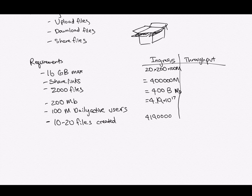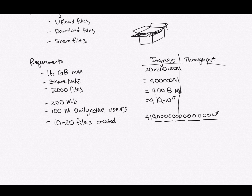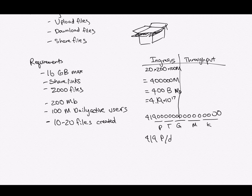Writing that down, we can calculate what that is in larger units: bytes, kilobytes, megabytes, gigabytes, terabytes, petabytes. Actually, I just messed up — it's actually going to be terabytes, not petabytes, because the first three conversions put it into the kilobyte range. So it will actually be 4.419 terabytes per day, not petabytes.